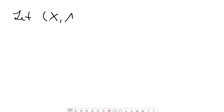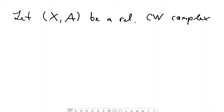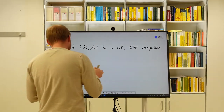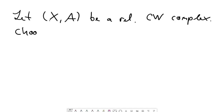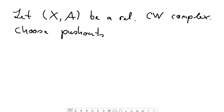We fix a relative CW complex X comma A, and if we want to make things explicit then there's no way around choosing pushouts to make everything explicit. The pushouts describe how the n-skeleton arises out of the n minus one skeleton.